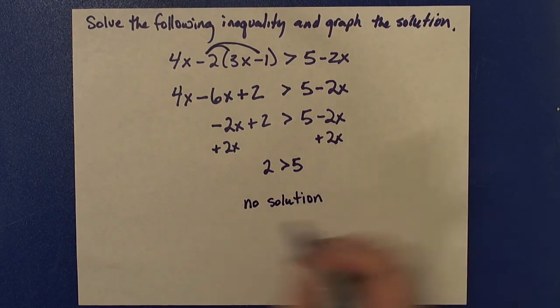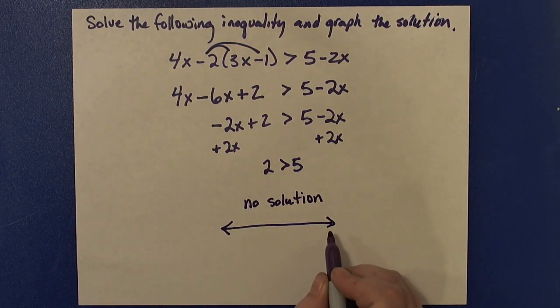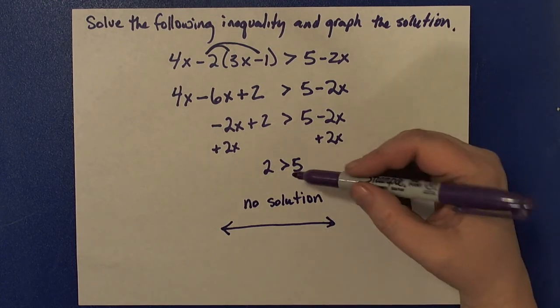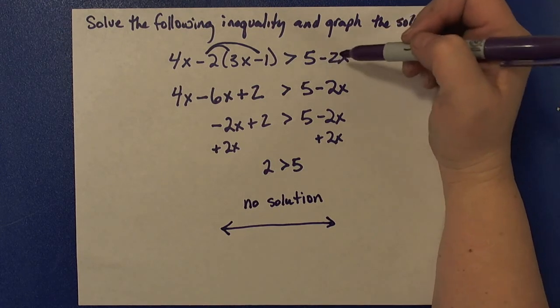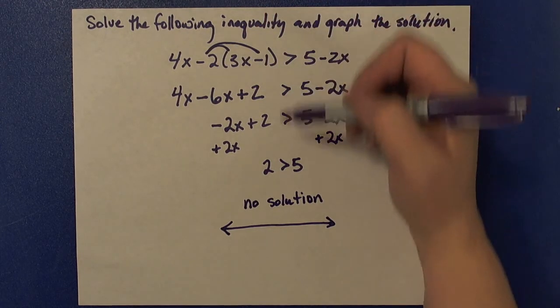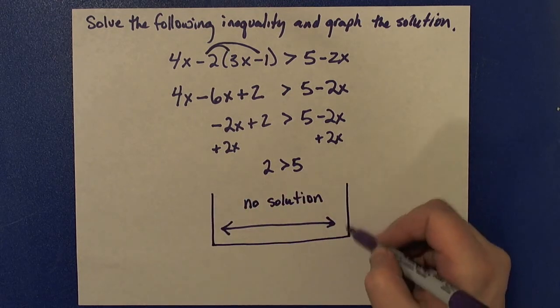So we write those words, no solution, and to graph no solution, that would be an empty number line. Nothing graphed or shaded in. What that's telling me is that if I go back to my original inequality, there are no x values that I could choose that would make it true.